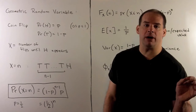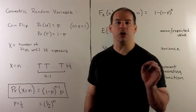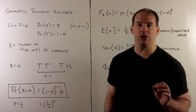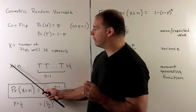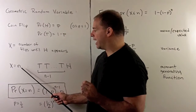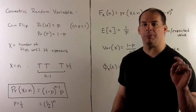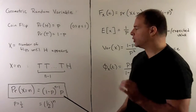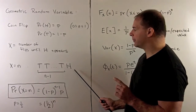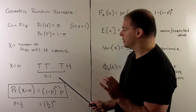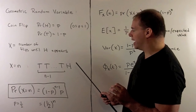For our geometric random variable X, we record the number of flips until our first heads appears. So if we consider where the random variable is equal to N, our first heads appears on the Nth flip, which means we have all tails leading up to that flip — that means N minus 1 tails and then a heads.